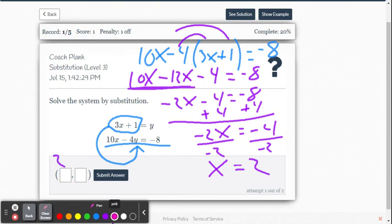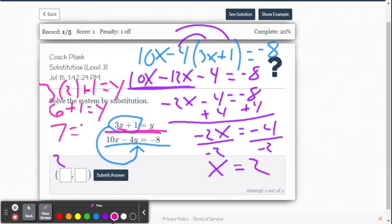So now we need to find y. I'm going to use the top equation because it's already in y equals form. It's y equals 3x plus 1. So we're going to go 3 times the 2 - I replaced the x there with 2 - plus 1 equals y. So I get 6 plus 1 equals y, therefore 7 is equal to y.